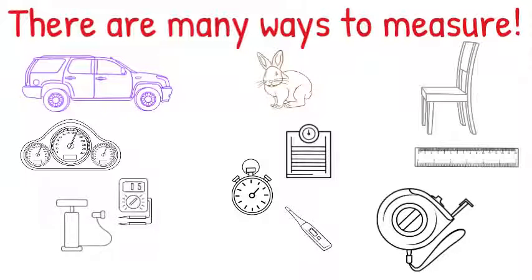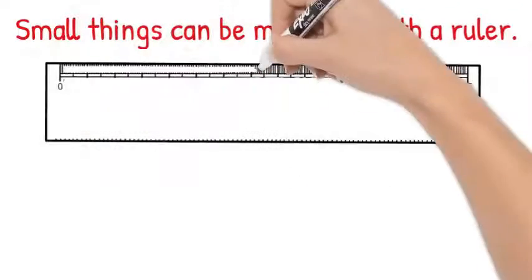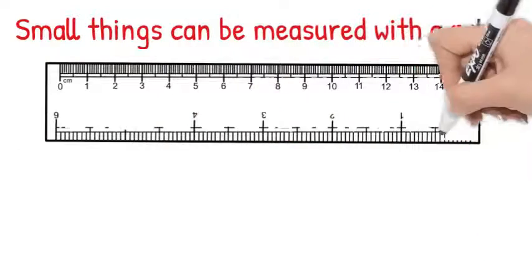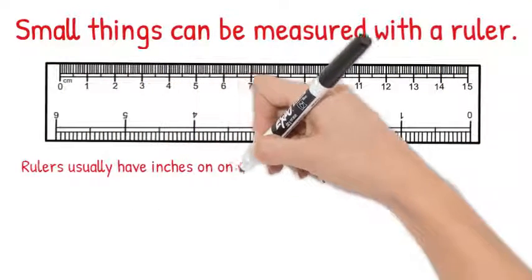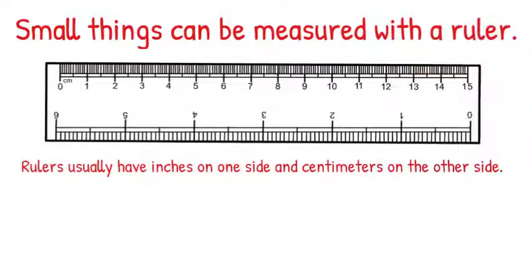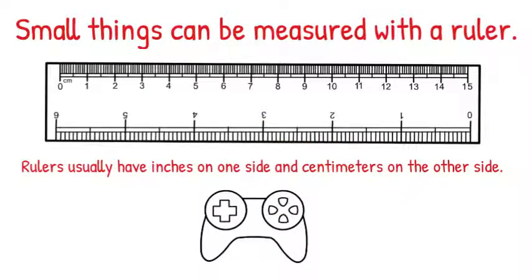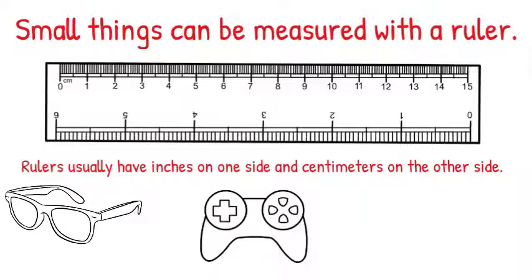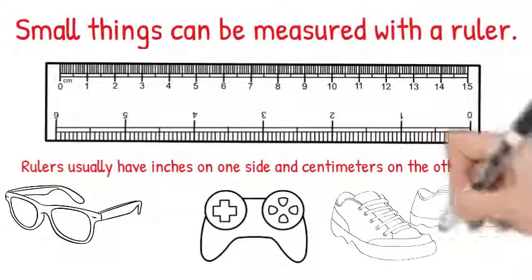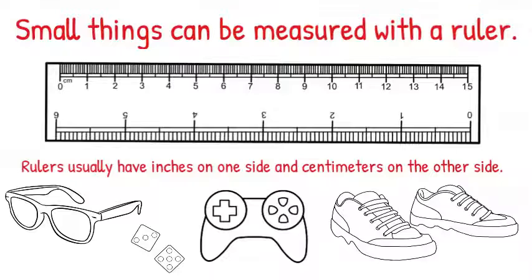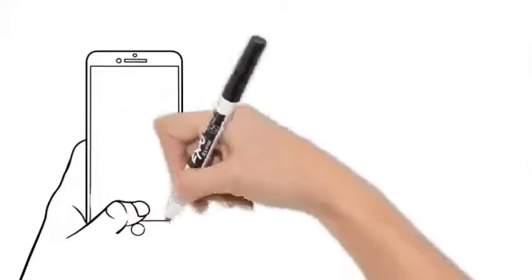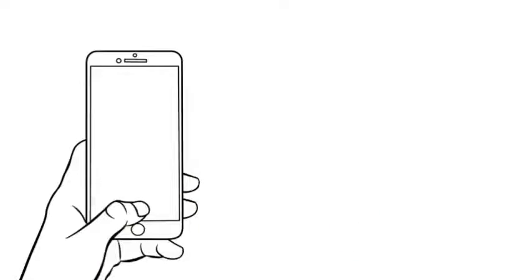Small things can be measured with a ruler. Rulers usually have inches on one side and centimeters on the other. Can you think of some things a ruler could measure? Let's measure a cell phone first.